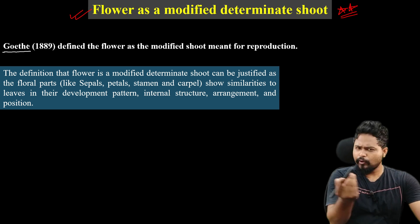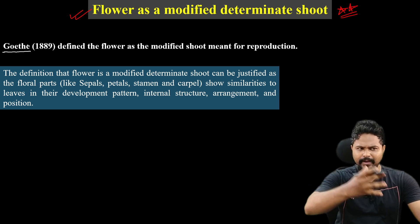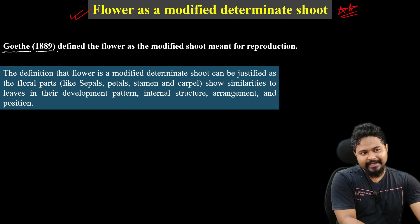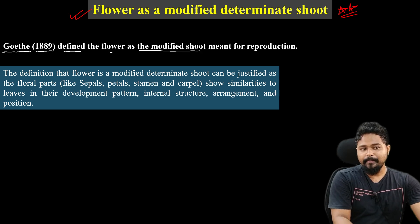Goethe in 1889 defined the flower as the modified shoot meant for reproduction.